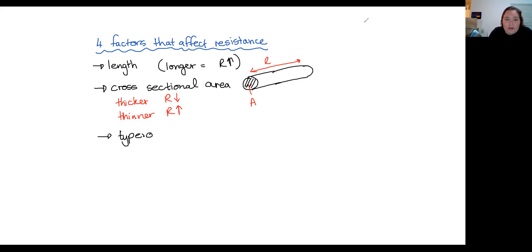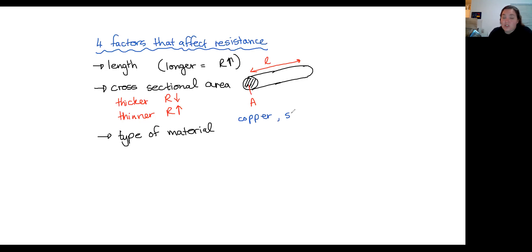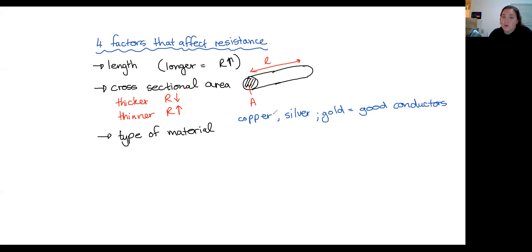The reason we don't usually use silver and gold for electrical wiring is that it's really expensive. But in certain electronic devices we use silver and gold because it's actually preferable to copper, though it costs much more. Also in South Africa, if we used gold and silver in our electrical wiring, they'd disappear faster than copper does. On the other hand, if we use nichrome wire — an alloy of nickel and chromium — or tungsten, those are particularly poor conductors and make good resistors.